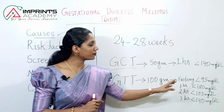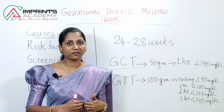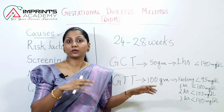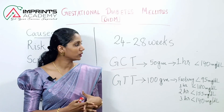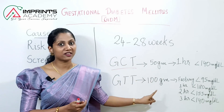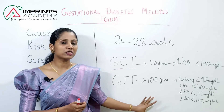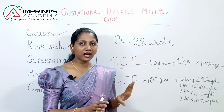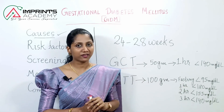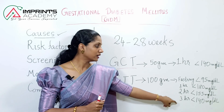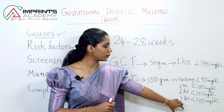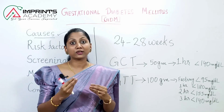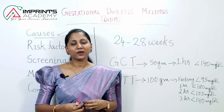In the Glucose Tolerance Test, we first check fasting blood sugar — normally 95 milligrams per deciliter. The patient is given 100 grams of glucose solution. Blood samples are taken at one hour, two hours, and three hours. If values are elevated at two or more readings, we can diagnose it as gestational diabetes.